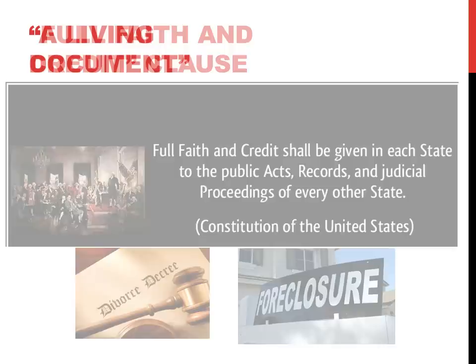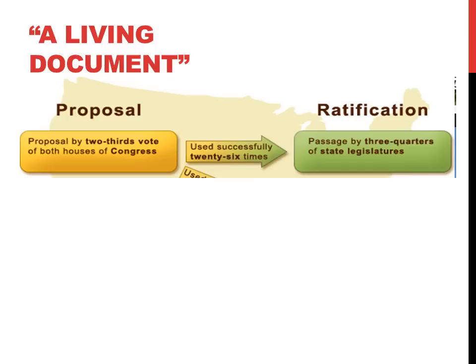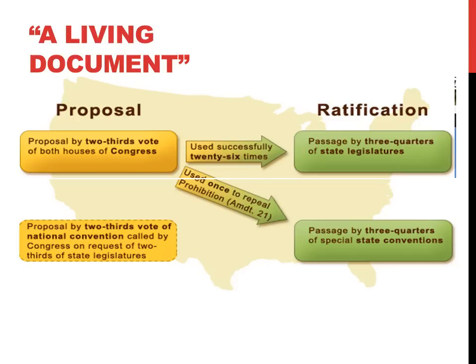Our Founding Fathers were wise enough to realize that many issues would come up in the future that the Constitution would not be built to handle. Thus, in Article 5, they created the amendment process — the reason why many today consider the Constitution a living document, because it can be altered or amended at any time. The most popular method calls for a proposal by two-thirds of both houses of Congress and ratification by three-quarters of the state legislatures. There is a second method using the convention process, which was used only once to repeal an amendment — when the Prohibition Amendment was repealed by Amendment 21.